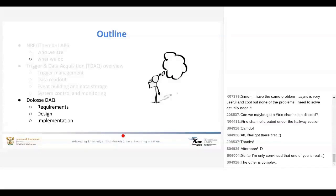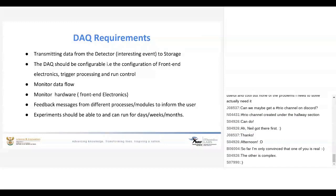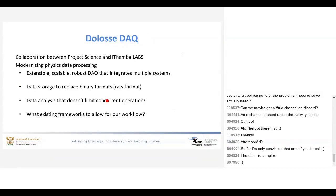Good day, everyone. My name is Bertram Losper. Today I'm going to have a discussion about what DOLOSE is, what are the requirements for data acquisition, and then go over the design and implementation of the DOLOSE data acquisition system. The requirements for data acquisition are basically just transmitting data from the physical phenomena being measured into storage. A data acquisition system should be reconfigurable depending on what experiment the researcher is running. You should be able to monitor the data flow from detector to storage, and monitor the front-end electronics via feedback messages. An experiment should be able to run for days or weeks.